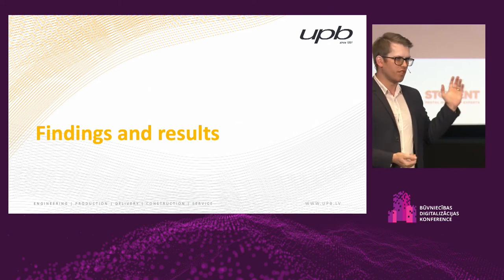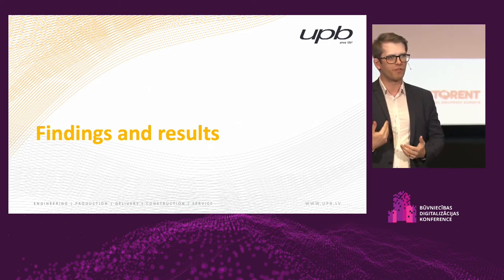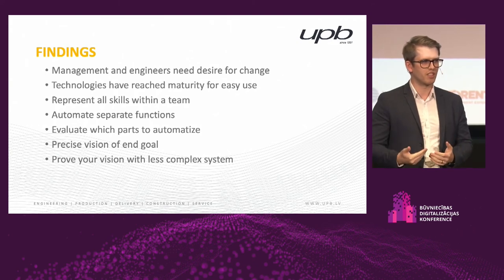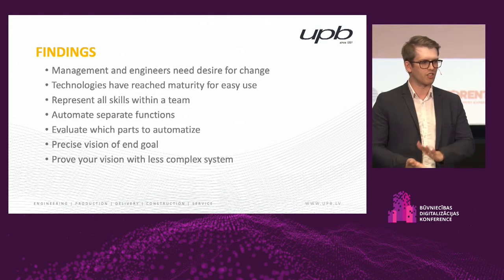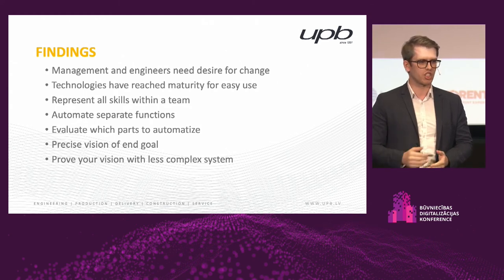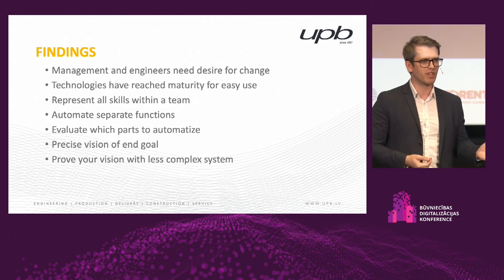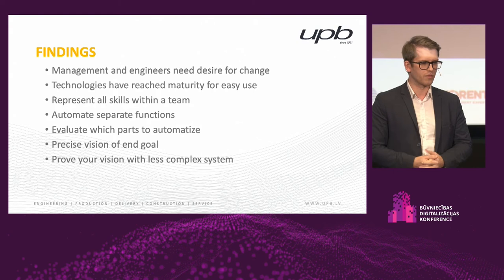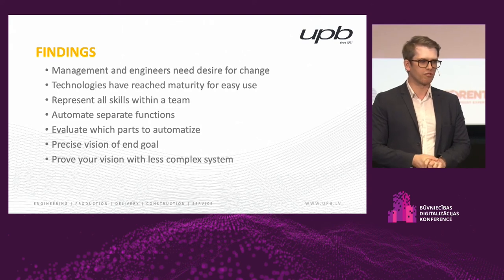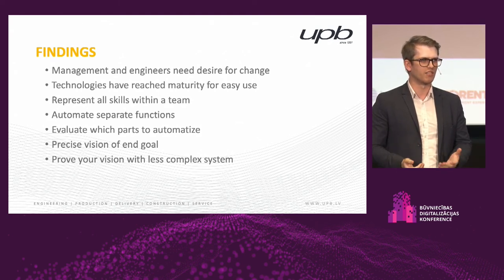To summarize our findings: to automate these processes, we need to change and start using new methods — parametrics or custom applications. Most importantly, both management and engineers need a desire for this change. For engineers, it means a desire to actually learn this way of working. For management, it means giving engineers time to learn. If there is this desire and this time, technologies have currently reached maturity for very easy use — technologies themselves and communities around them like Grasshopper, Dynamo, and programming languages. It's comparatively easy, and if you are already an engineer, it should be easy to pick these things up.